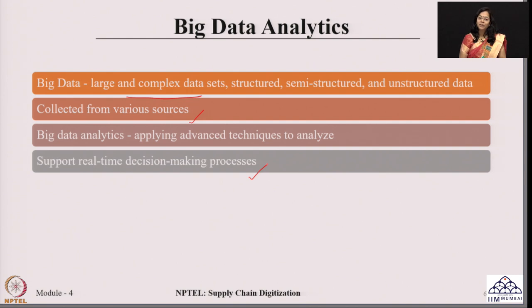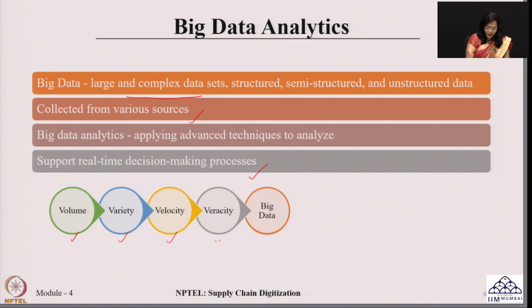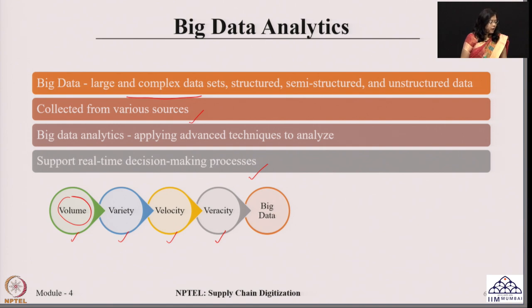There are four characteristics of big data, important for us to understand so that we can act accordingly. These four characteristics are referred to as volume, variety, velocity and veracity. When we talk about the volume of data, this volume is actually data which has enormous magnitude and cannot be analyzed in a routine way. This is a large volume of data and for analyzing this type of data, traditional tools are not sufficient.